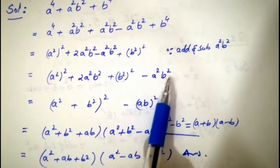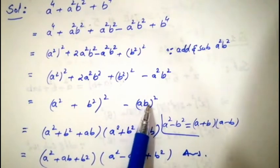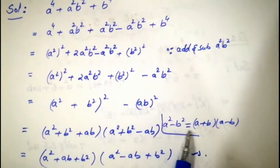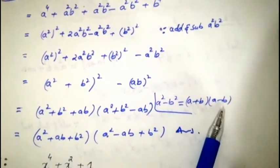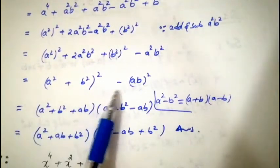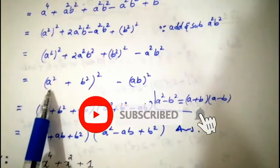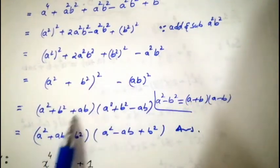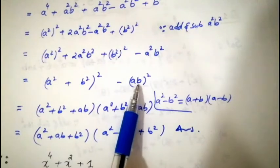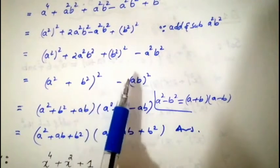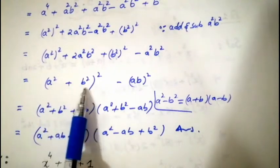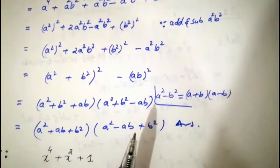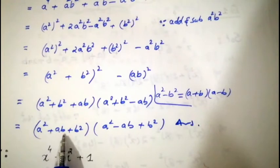Now applying the formula a² − b² = (a + b)(a − b): here a = a² + b² and b = ab. So we get (a² + b² + ab)(a² + b² − ab). You are already familiar with this formula. We can write a² + ab + b² and a² − ab + b².